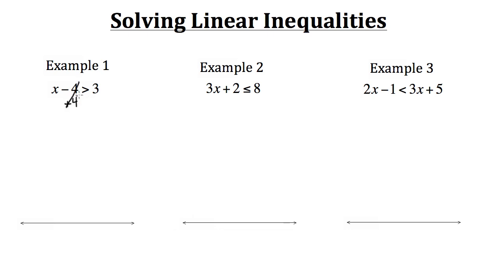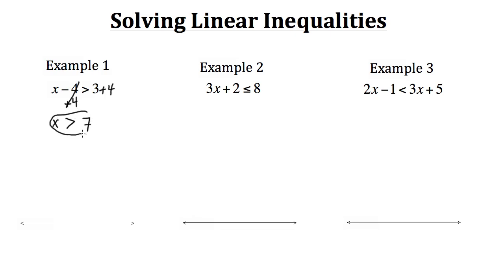Adding 4 cancels it out, and we also add 4 to the other side. That gives us x, keeping the greater than sign, and then 3 plus 4 which is 7.